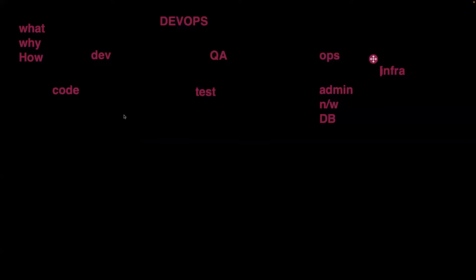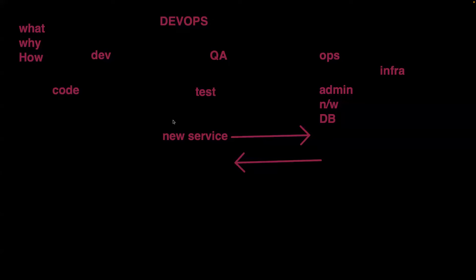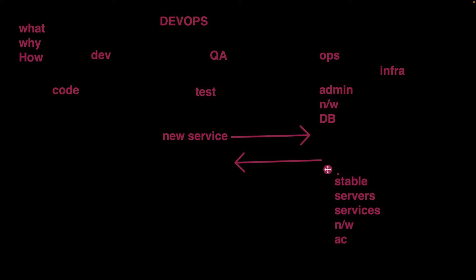Before ops team serves the request, they do a lot of checks — if this new service or change is done, will the infrastructure be stable? Will any servers go down, any service stop, any network disconnect, any access be affected? They check all of these things before serving the request. You can consider admins, network technicians, and DBAs under ops. All of this definitely takes some time.